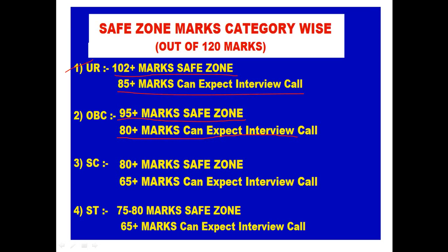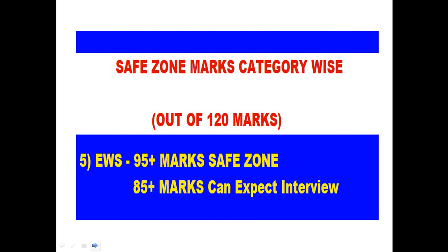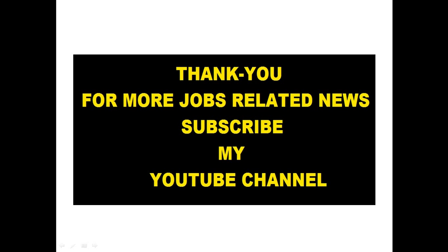For OBC candidates, 95 plus marks could be the safe zone, and 80 plus marks candidates can expect an interview call. For SC candidates, 80 plus marks is the safe zone and 65 plus marks can expect an interview call. For ST candidates, 74 to 80 marks is the safe zone and 65 plus marks can expect an interview call. For EWS candidates, 95 plus marks is the safe zone and 85 plus marks can expect an interview call.